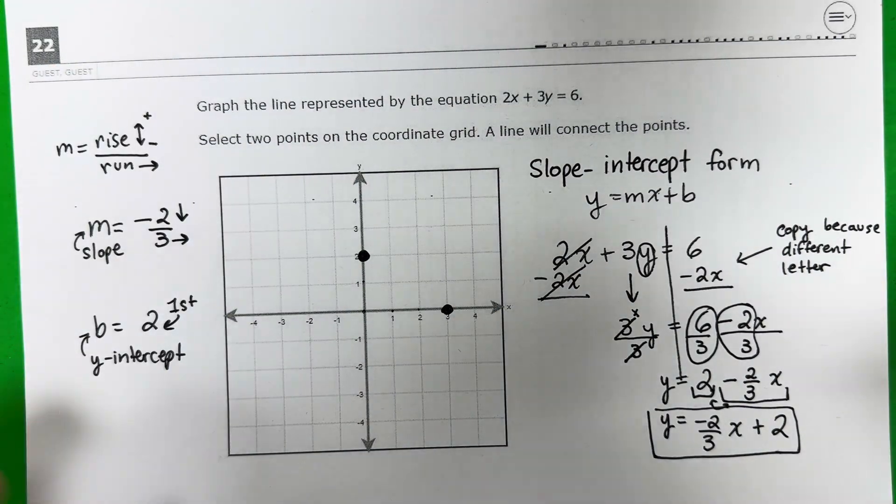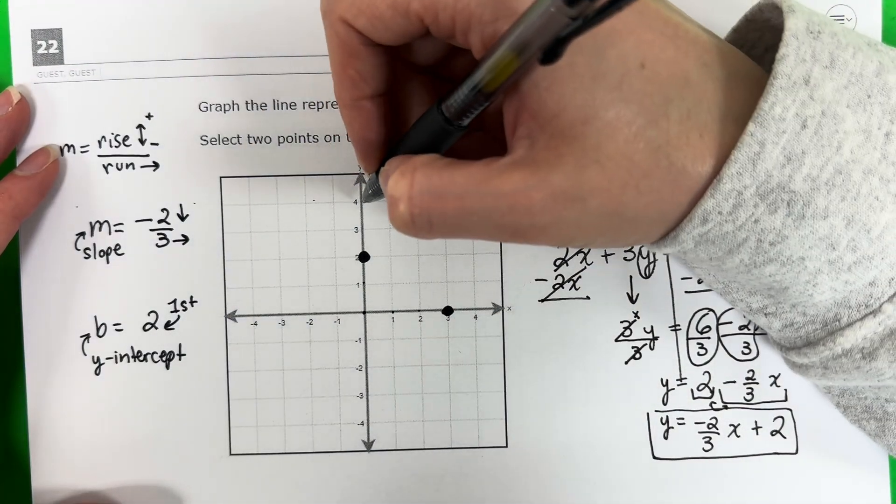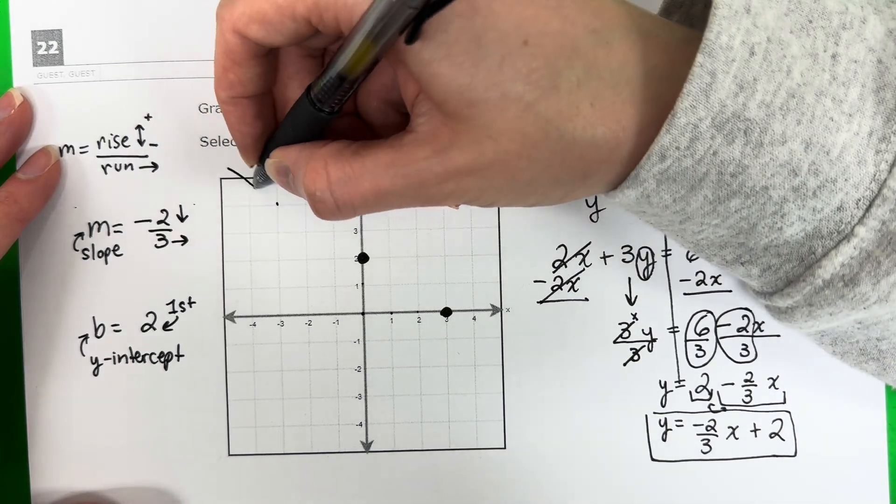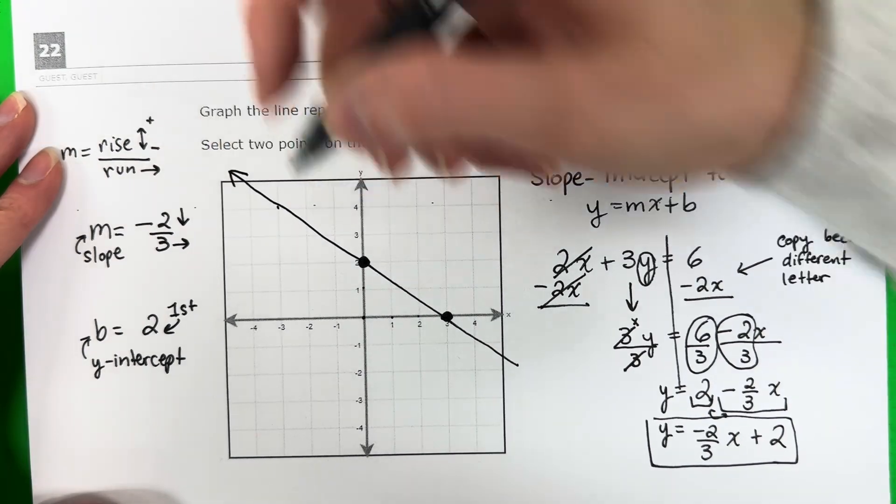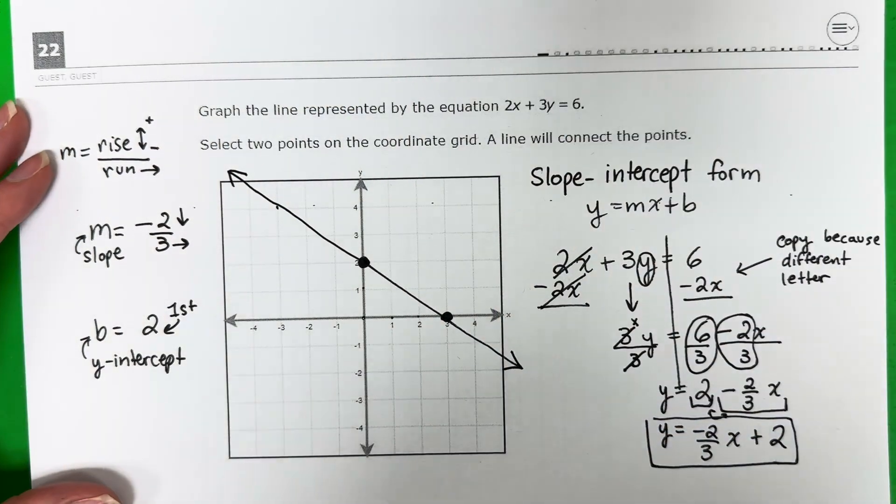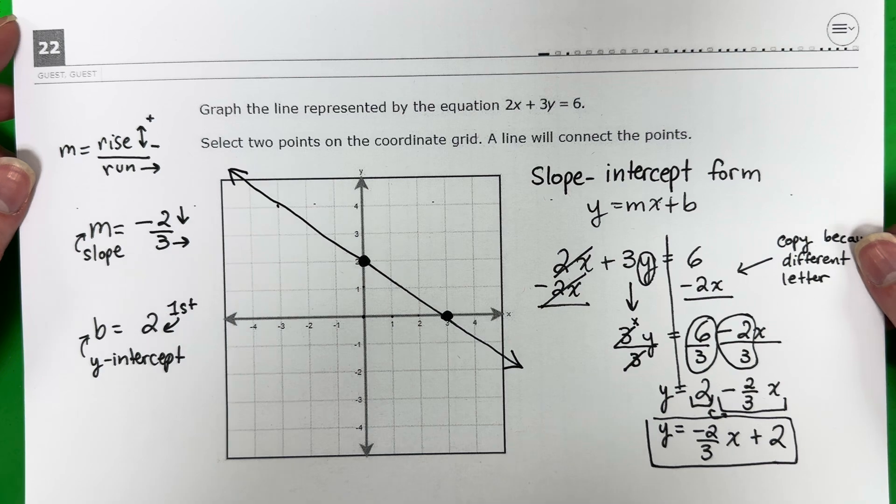There you go. And then you're going to go ahead and just connect that line right there. Connect it all the way across. And put arrows at the end. And there you go. That would be how you graph that.